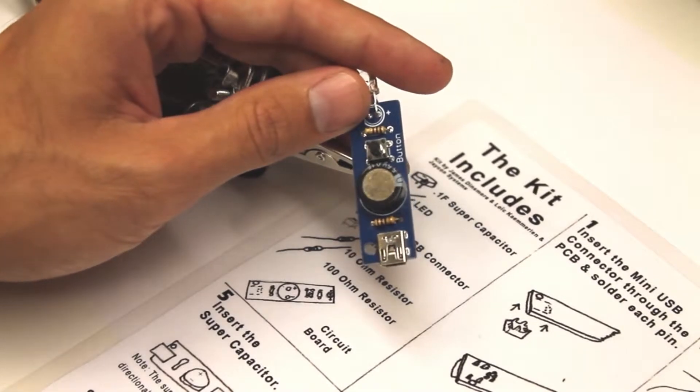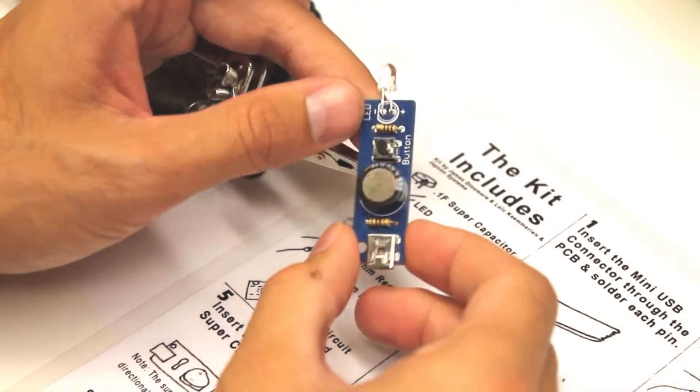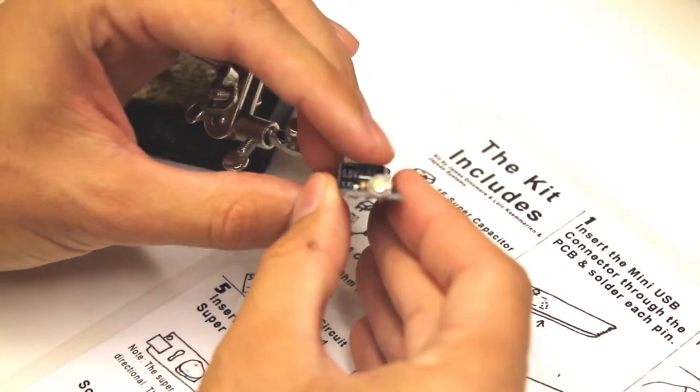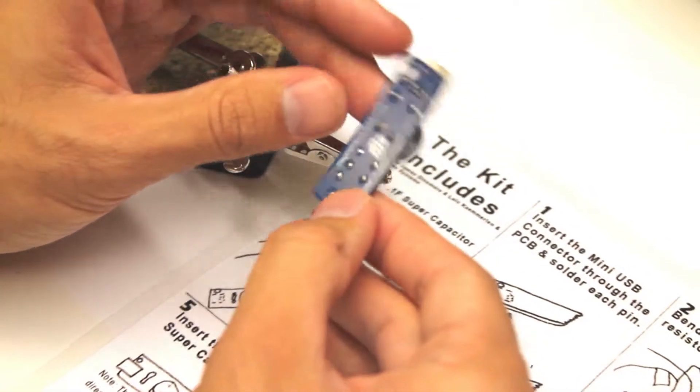This is the finished kit. After it's all assembled, the supercapacitor, you have the button, the LED, the two resistors, and the USB connector. Push the button and the LED turns on. This is what it looks like all assembled.